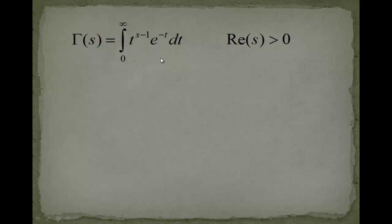The gamma function is defined as this integral and very important it's absolutely converging for the real part being greater than zero. So the real part of this complex variable s. An absolute convergence is a very important thing you will see why we need that.